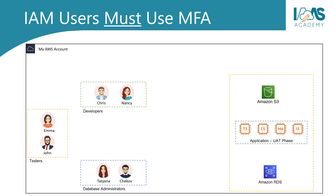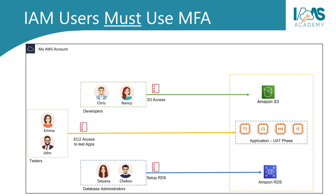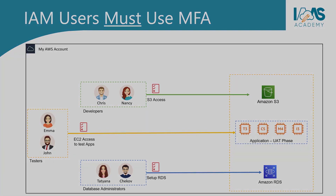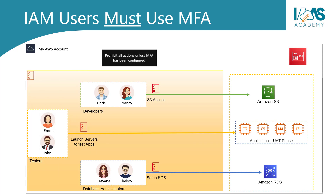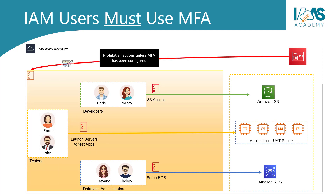To enforce the principle of least privilege, we want to ensure that our users only have the necessary permissions to perform their specific job roles. In addition, we want to ensure that our users are authenticated with MFA before they can access any of these services. What we can do is apply another overarching policy to our users. This policy will prohibit all actions unless users have been configured with multi-factor authentication. So even though our database gurus have been granted access to Amazon RDS, they will not be able to access the service unless they have been authenticated with MFA.